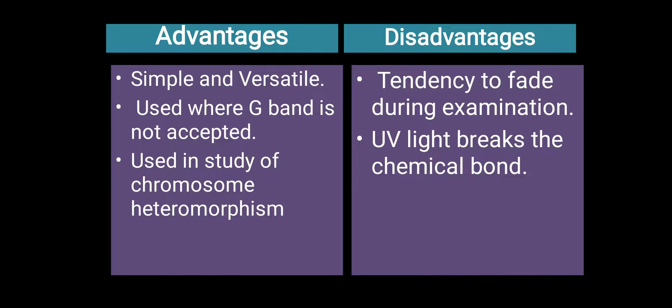The advantages of Q banding are that it is very simple and versatile — we just add quinacrine mustard stain and the condensed regions absorb the color while euchromatin regions do not, allowing us to visualize bands. This technique is used where Giemsa staining is not applicable, such as for plant chromosomes. It is also used to study chromosome heteromorphism — where two homologous chromosomes differ in their morphology — for example, the sex chromosome.